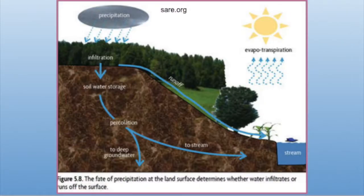When water enters the soil, it does not just move straight down. It follows a pattern called a wetting front, meaning that water moves out to the sides and down. The space between soil particles is uneven and can be highly variable, so water does not follow a uniform path of movement.